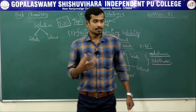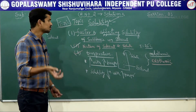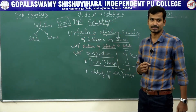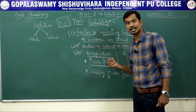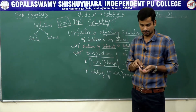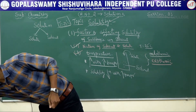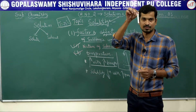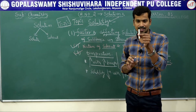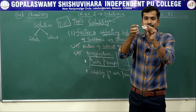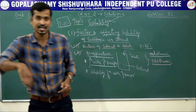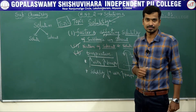Another important concept: water is called the universal solvent because it can dissolve the maximum number of solutes. This property depends on the dielectric constant or dipole moment. The dielectric constant is the ability or capacity of a solvent to break the force of attraction between molecules. Water has a high dielectric constant and therefore has the ability to dissolve a maximum number of solutes.